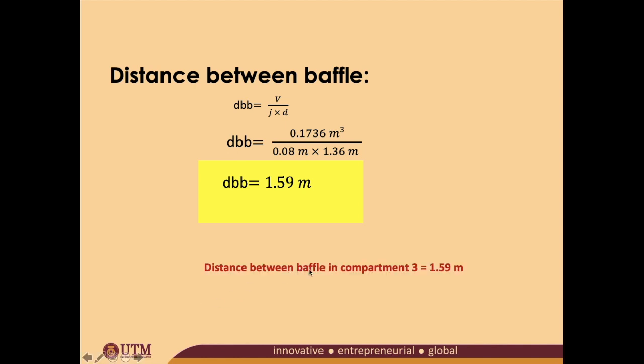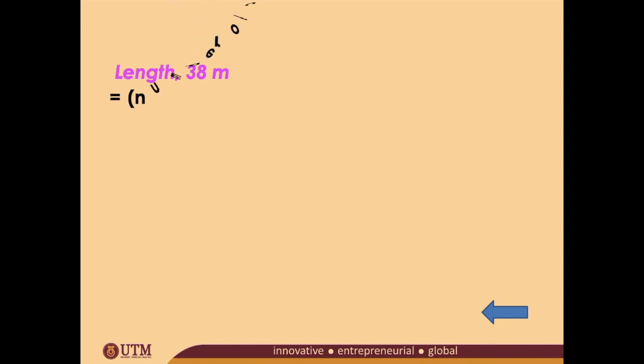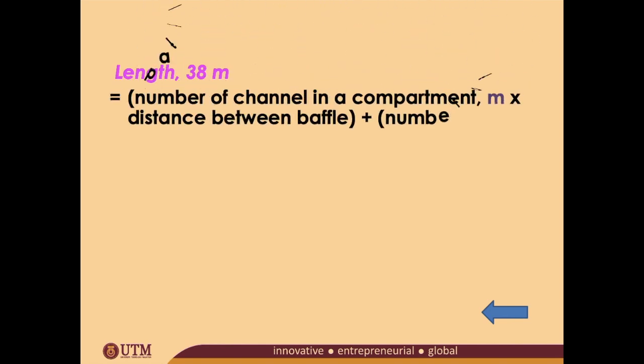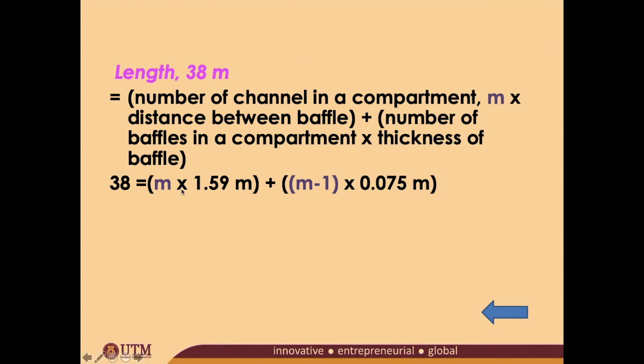Therefore, the distance between baffles in compartment 3 now is bigger size - there's wider spacing which is 1.59 meters. Doing for the last time to find out the number of channels. Now the distance between baffles has changed again and it is 1.59 meters. We solve this equation and we will be obtaining a value of M to be 22.9 or 23.